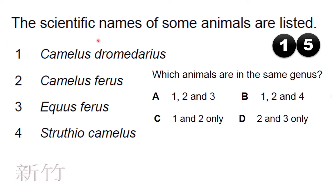The scientific names of some animals are listed. Which animals are in the same genus? Looking at the genus names, Camelus and Camelus are the two that share the same genus. So the answer is C.